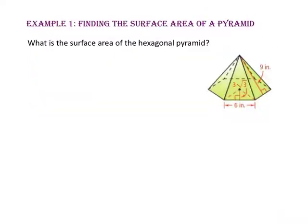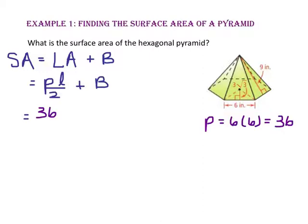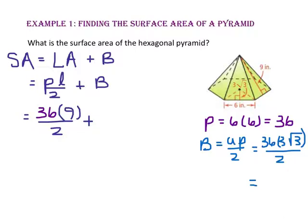In example 1, we will find the surface area of a pyramid. What is the surface area of the hexagonal pyramid? Let's start with the formula for surface area: the lateral area plus the area of the base. To find the lateral area, we will take the perimeter of the base times the slant height divided by 2. The perimeter is 36 since there are 6 sides, each with a length of 6 inches. The slant height is 9, and the area of the base is the perimeter of the hexagon, 36, times the apothem, 3√3, divided by 2. So the area of the base is 54√3.